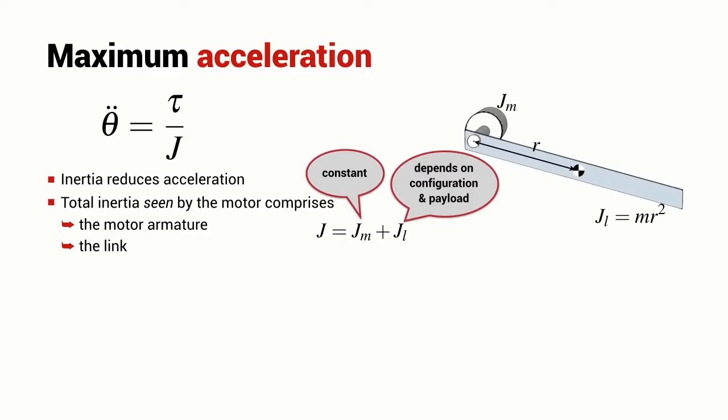However, in a real robot, there's typically a gearbox between the motor and the link and this is another advantage of the gearbox because it allows me to write the expression for inertia like this. The inertia of the link is reduced by a factor of G squared and for a robot like the Puma, G is a number anywhere between say 10 and 100.